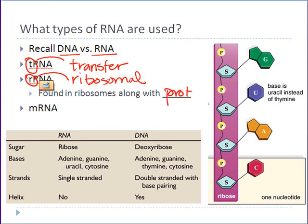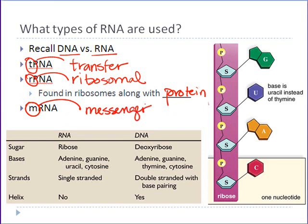The last type of RNA we're going to concern ourselves with is messenger RNA, or mRNA — I mentioned that already. The 'm' in messenger RNA stands for messenger. This type of RNA serves as a copy, in a way, of the DNA of the gene that codes for a recipe for making a particular protein.